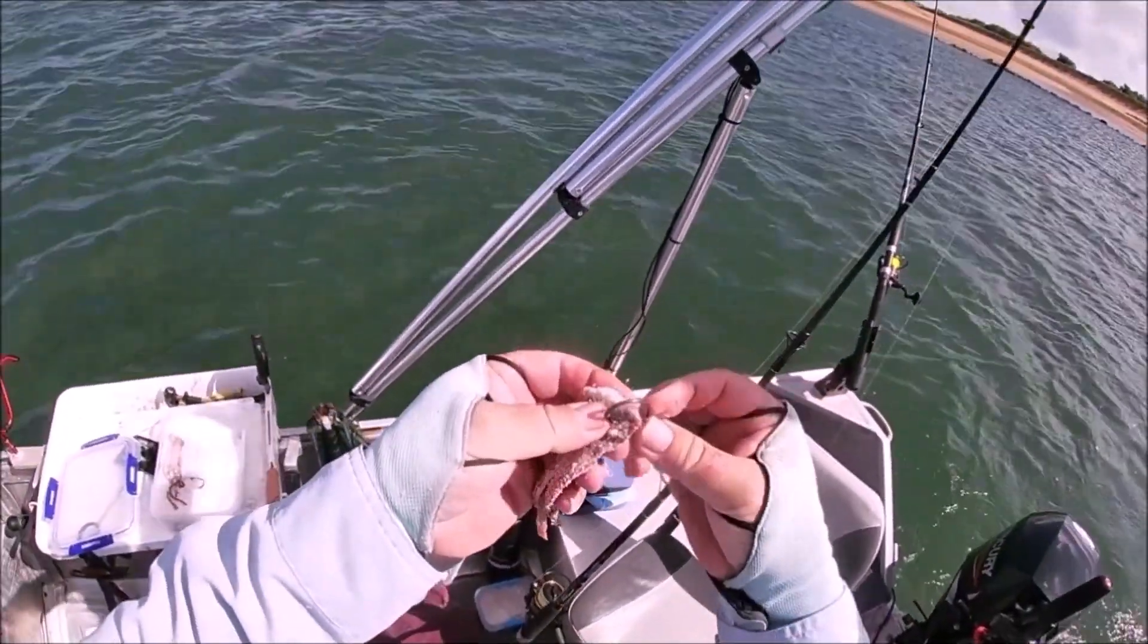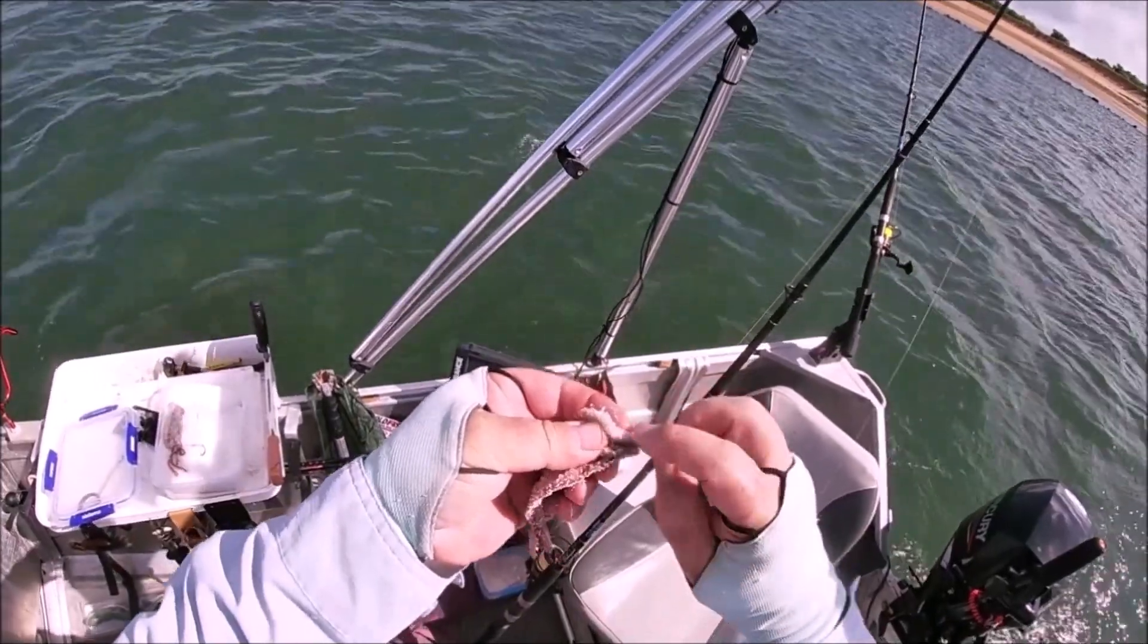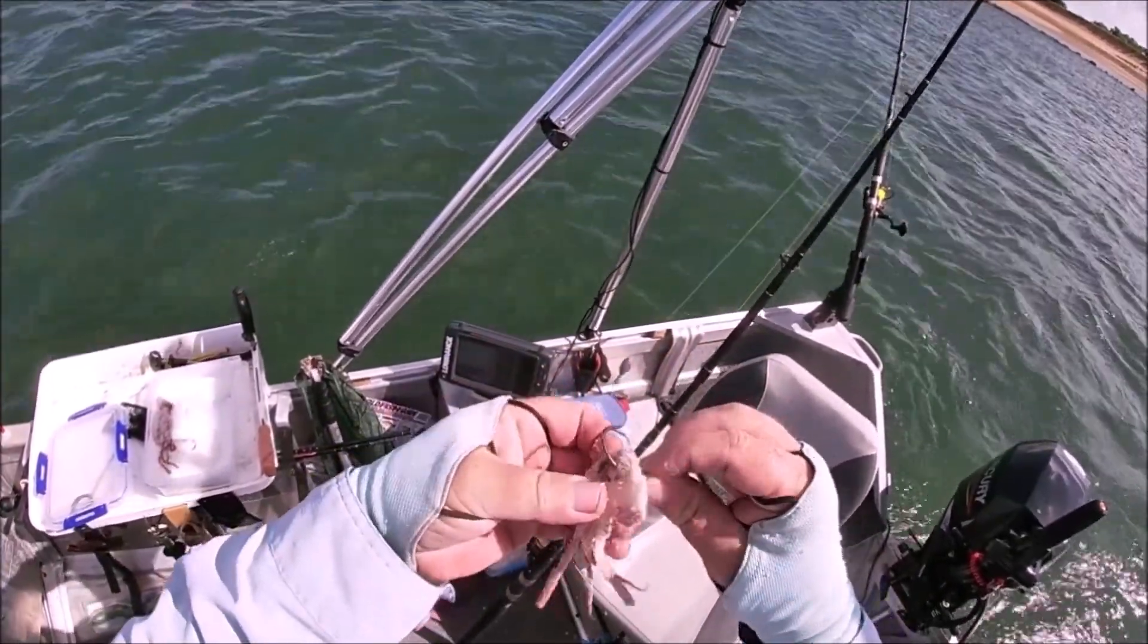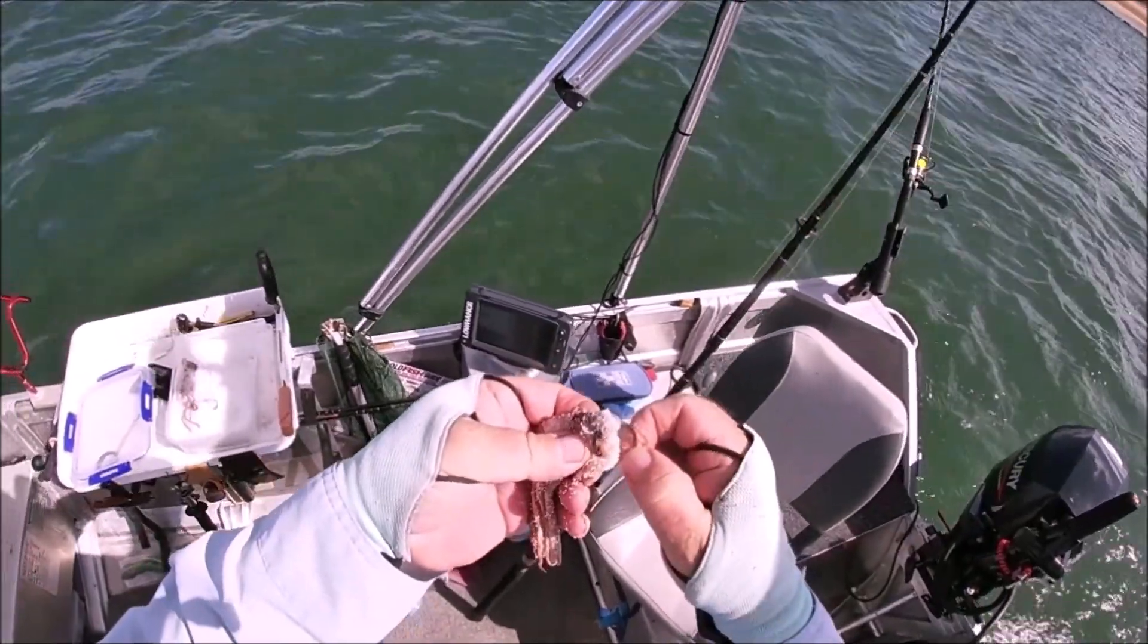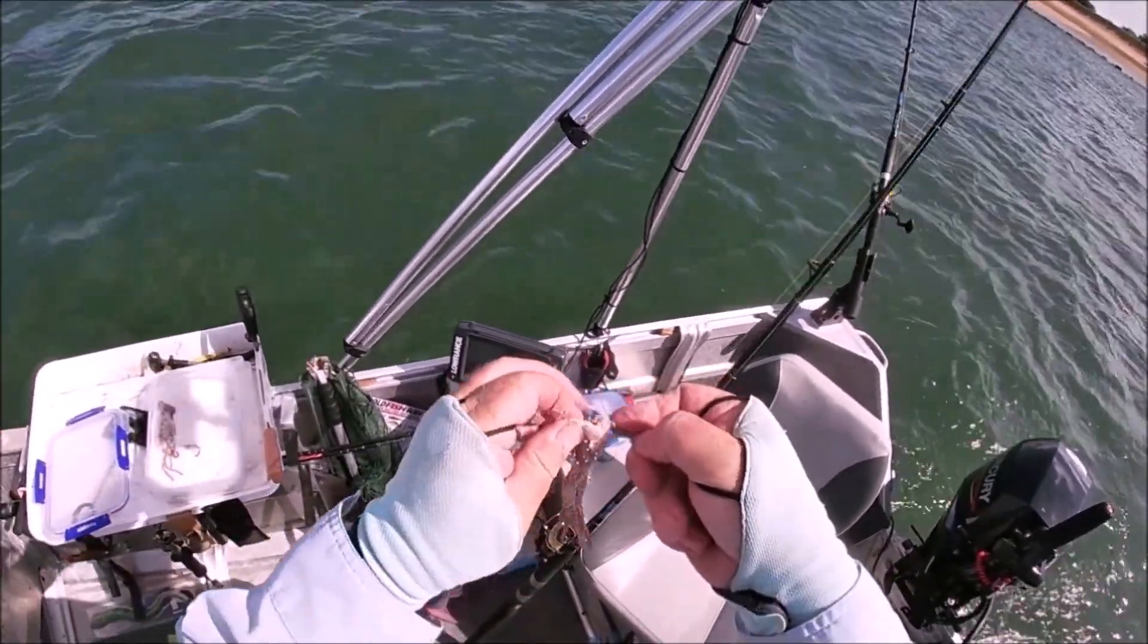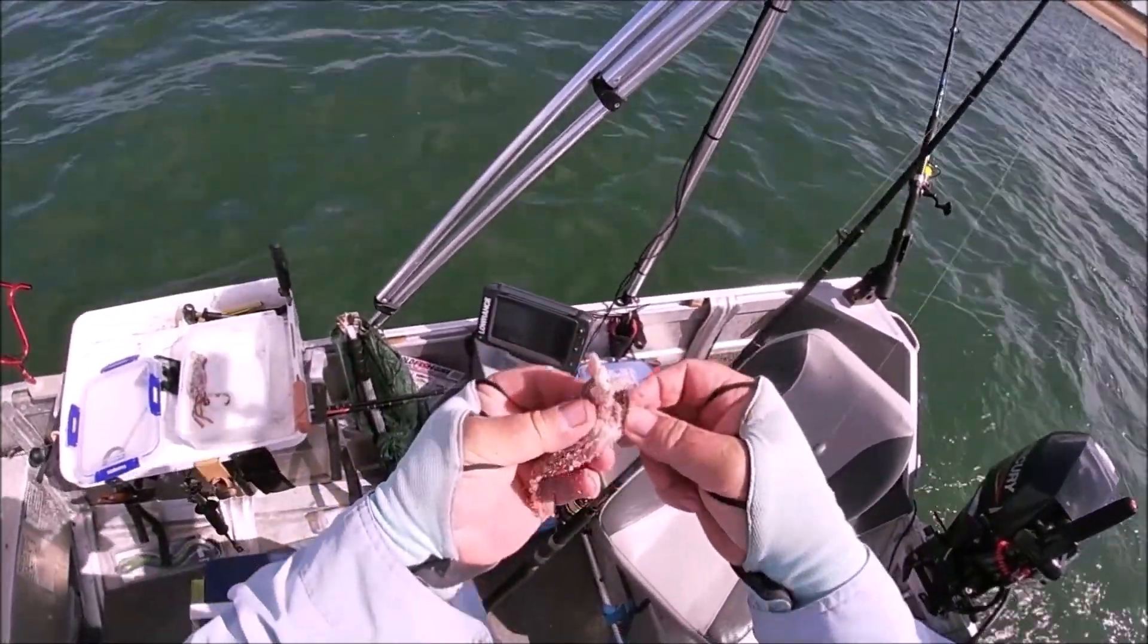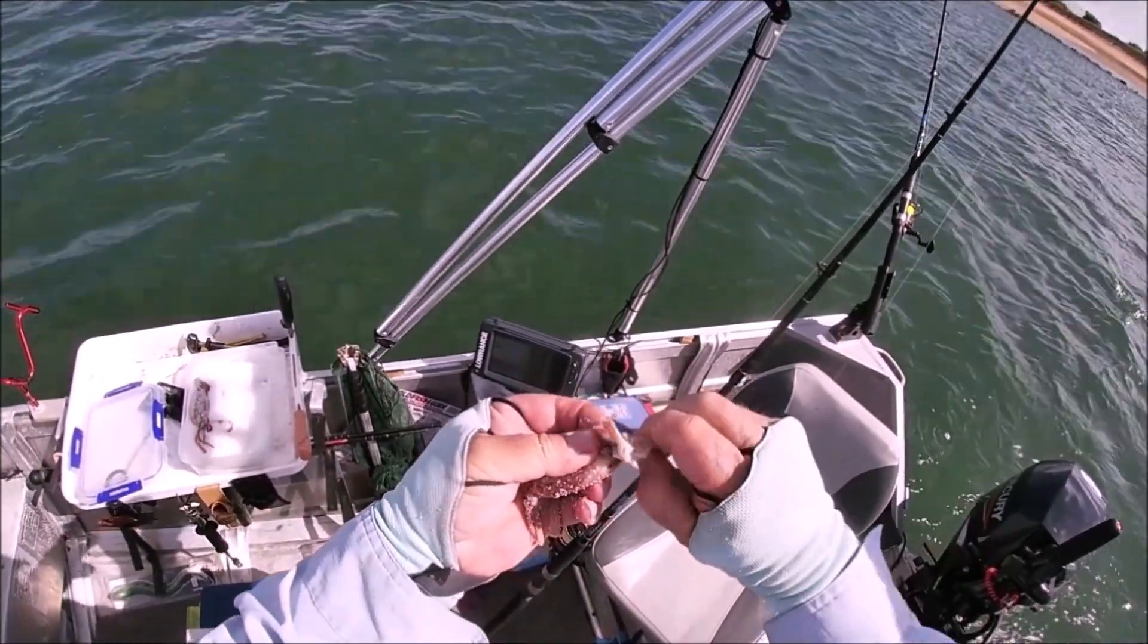For baits like squid with the tentacles hanging off them, hook it through the top a couple of times to make sure it holds on, making sure that the hook is bared, so when it hangs up it does actually look natural with the tentacles hanging off.